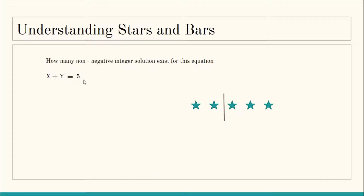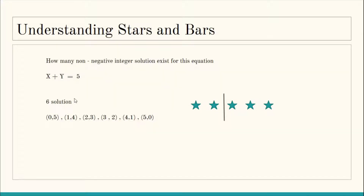This configuration corresponds to a solution of (2, 3), that is 2 + 3 = 5. Using Stars and Bars we can represent the solution of this equation graphically. There are six solutions total, ranging from (0,5) to (5,0). For each of these solutions there is a specific configuration of the stars and bars — there are only six different permutations of five stars and a single bar.